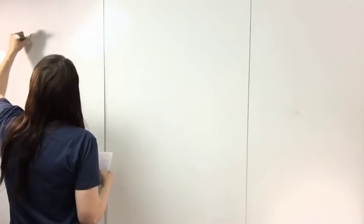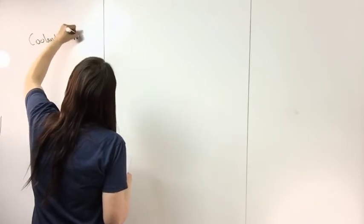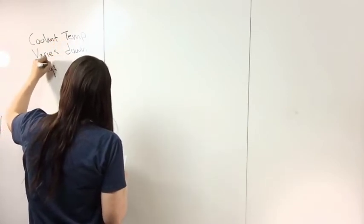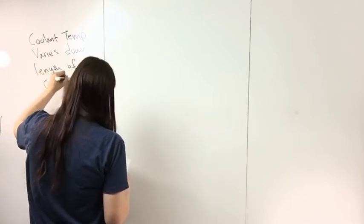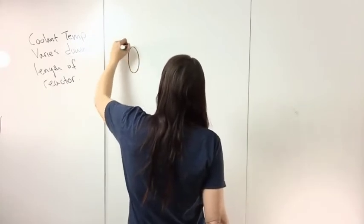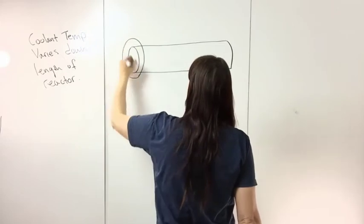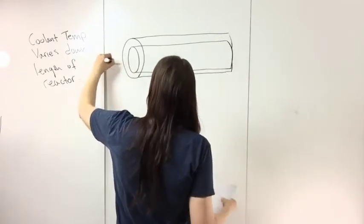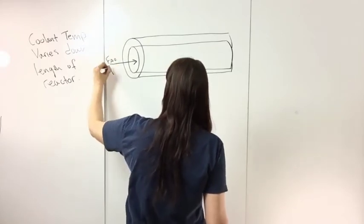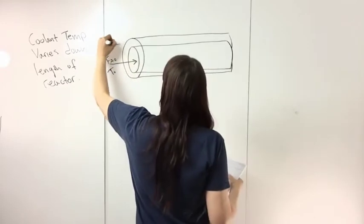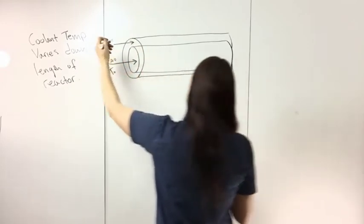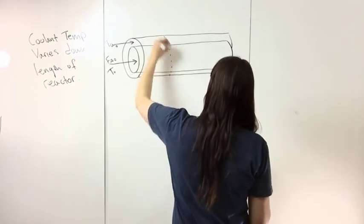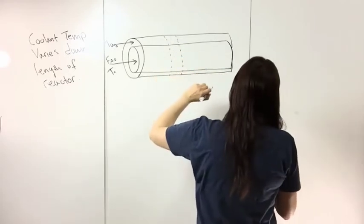So this is the coolant temp varies down length of reactor. Just drawing the reactor real quick and then you have a heat jacket on it. Inside the reactor you have your flow at some temperature entering, and then you have the flow through this jacket.